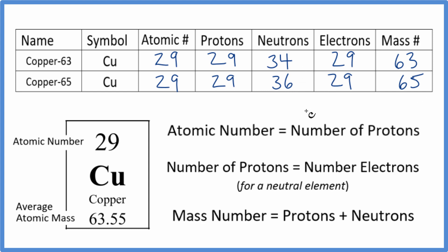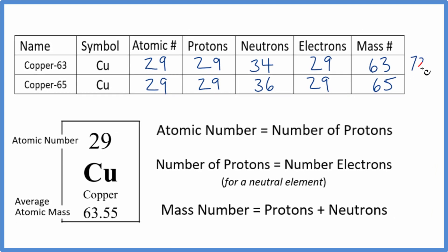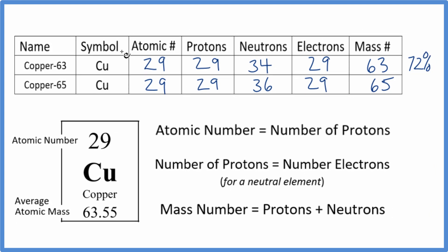If you had a sample of copper, most of it would be copper-63. We have a mass number of 63 with 34 neutrons. About 72% of the sample would be this copper-63.